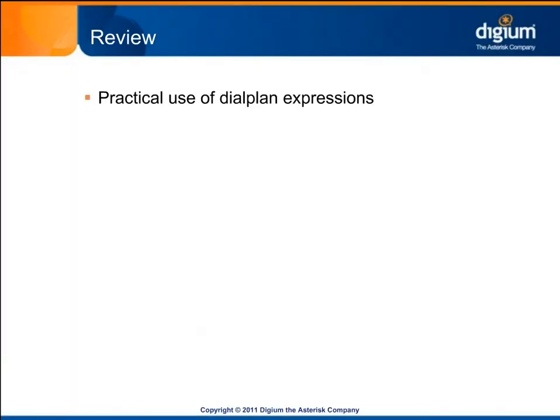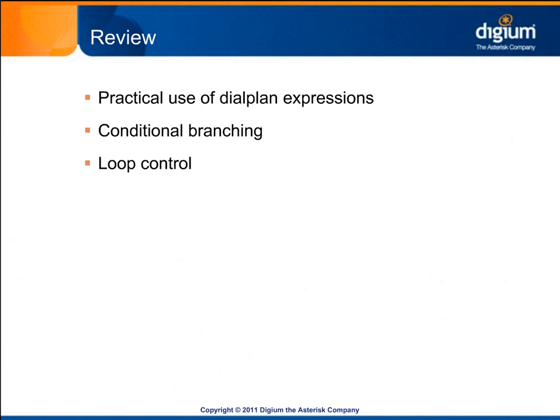This module has demonstrated a practical use of dial plan expressions. Conditional branching in the Asterisk dial plan is a powerful way to concisely define dynamic behavior. Using expressions and conditional operators, along with the GoToIf application, you can route calls in the dial plan to defined destinations. One very common use of this technique is to implement loop control, including hanging up calls when a caller has failed to make a valid selection after several attempts. Next, we'll continue expanding the capabilities of the Asterisk call routing engine by introducing dial plan functions.